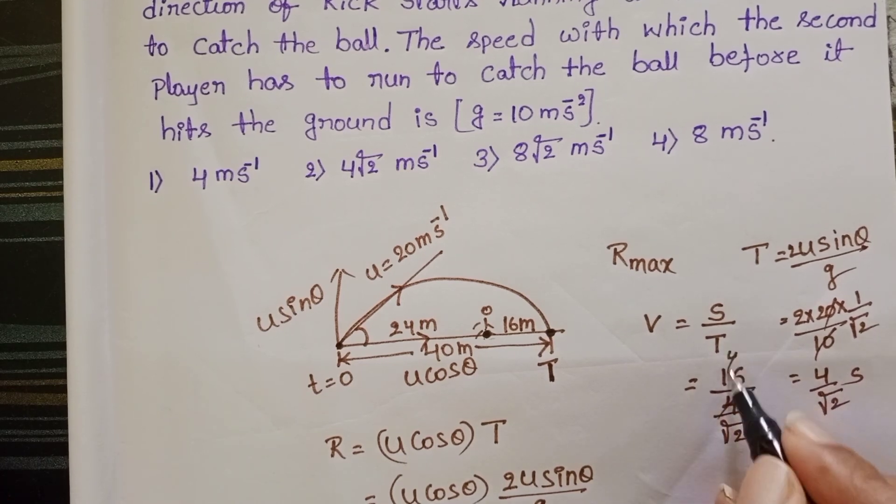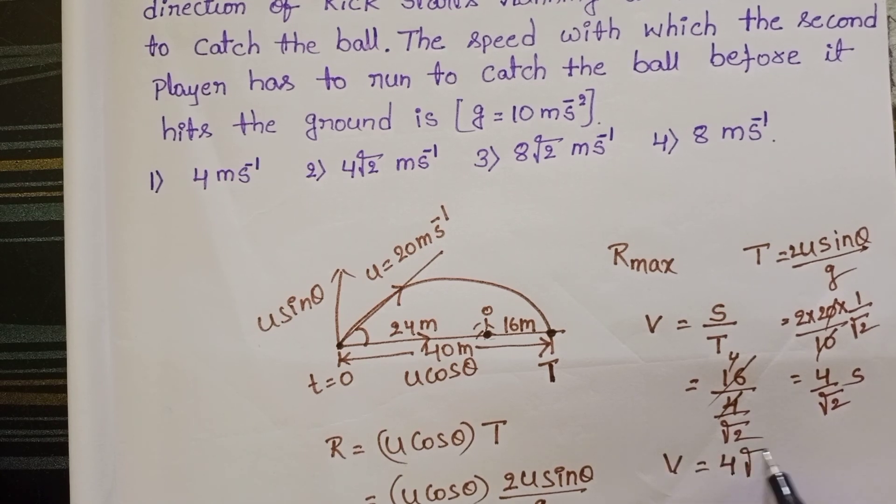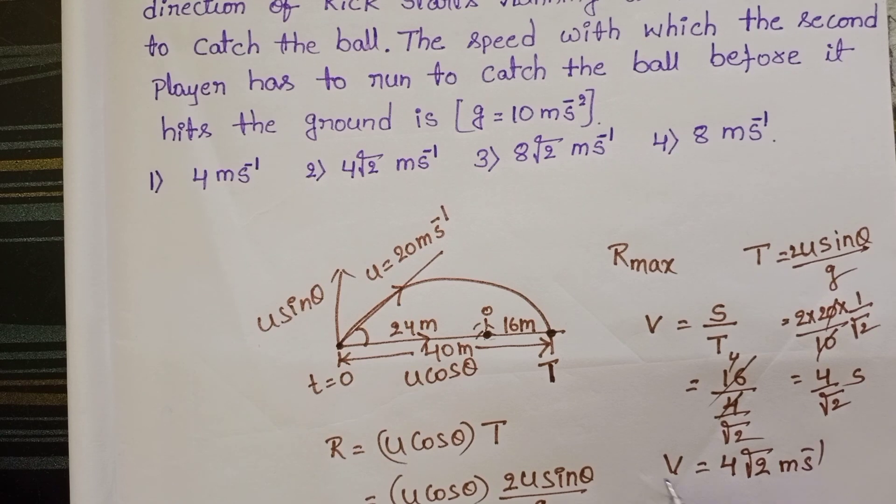So 16 by 4 by root 2, speed of the second player is equals to 4 root 2 meters per second.